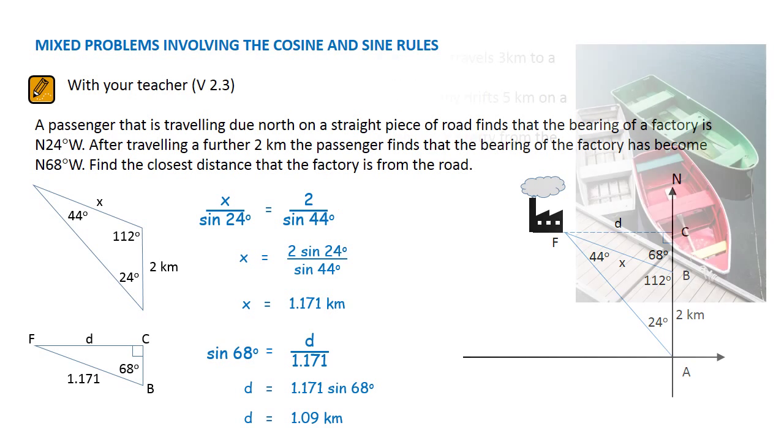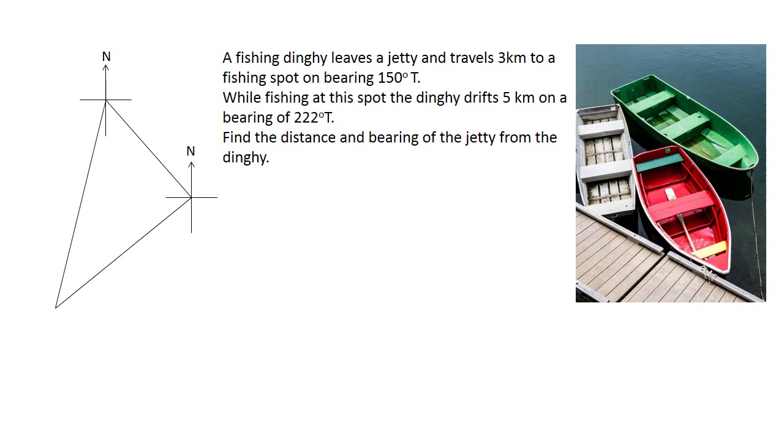Let's have a look at another problem. A fishing dinghy leaves a jetty and travels 3 kilometers to a fishing spot on bearing 150 degrees true. While fishing at this spot the dinghy drifts 5 kilometers on a bearing of 222 degrees true. We need to find the distance and bearing of the jetty from the dinghy.